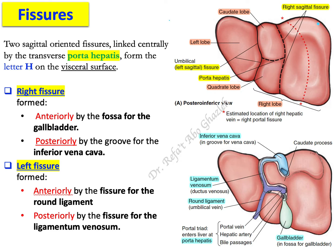Looking at the visceral surface of the liver, you can see two sagittally oriented fissures — one on the right and one on the left — connected to each other by a transverse fissure, which represents the porta hepatis or hilum of the liver. Together they create an H-shape on the visceral surface.